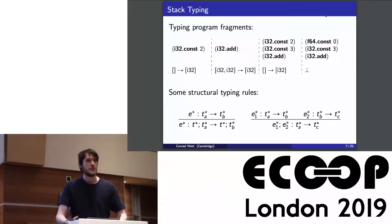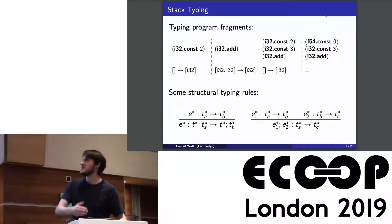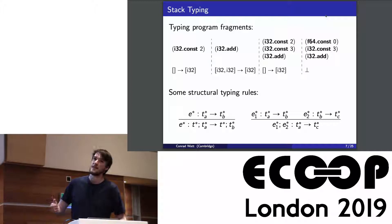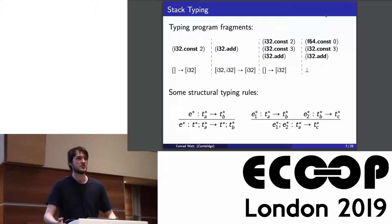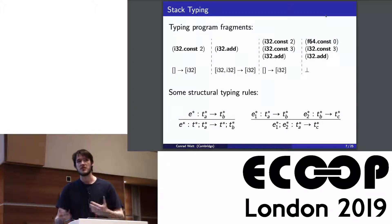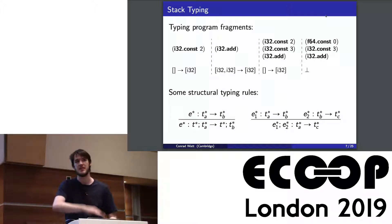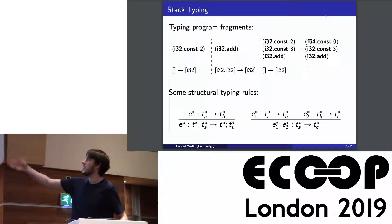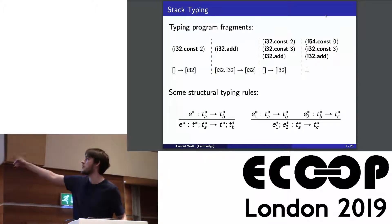From thinking about WebAssembly types as transforming stack to stack, you get some structural rules. The structural rule on the left says: if I have a sequence of instructions which transform one stack into another, I can also give those instructions the type where you're transforming a bigger stack but leaving the base untouched. And if you have two different groups of instructions that are both transforming the stack, you can compose them and get the result of running them one after the other.